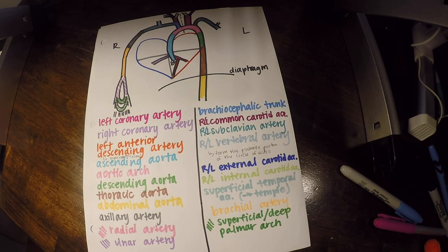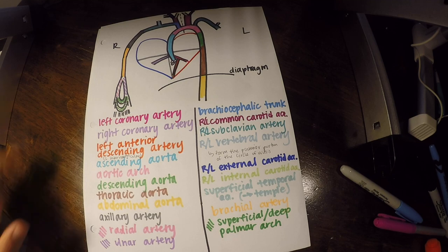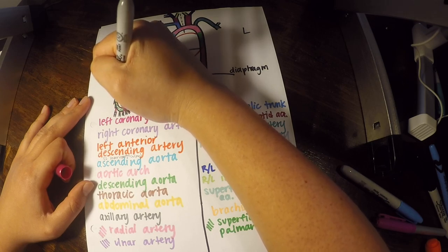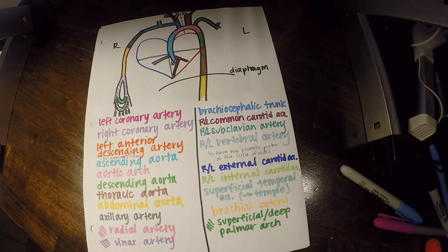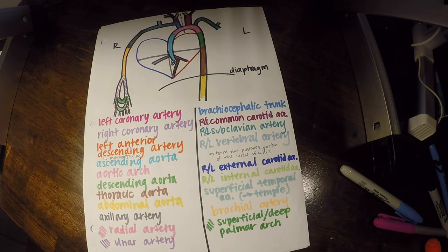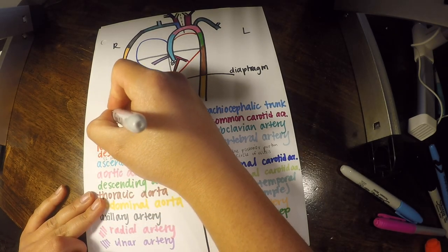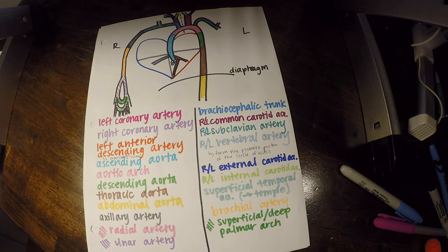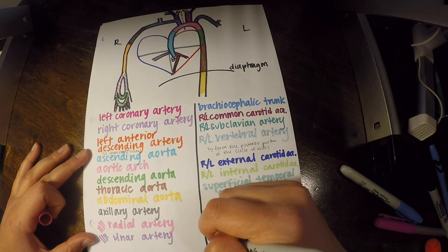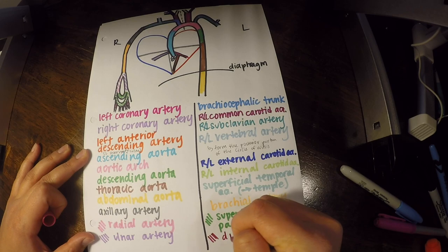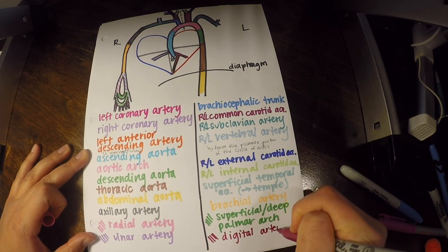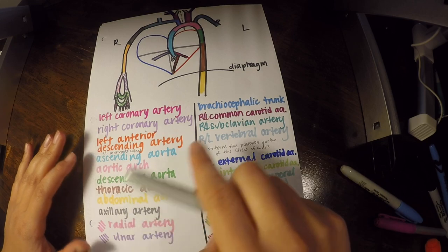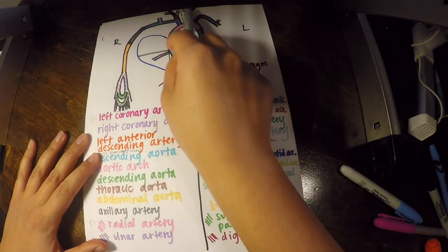And lastly, we have our digital arteries that make their way to our digits. So this has covered arteries that come out from the heart. Remember, all of these ones are going up towards our head and neck, and we're going to go over a little bit of detail into some arteries that actually go into the brain next.